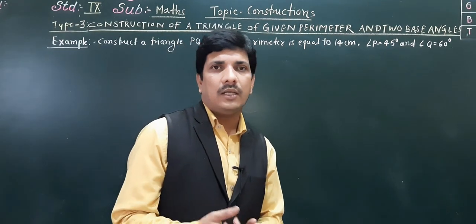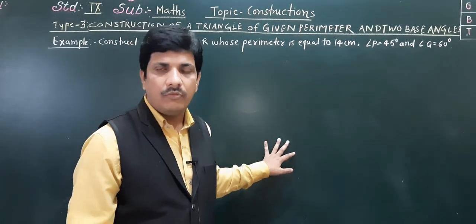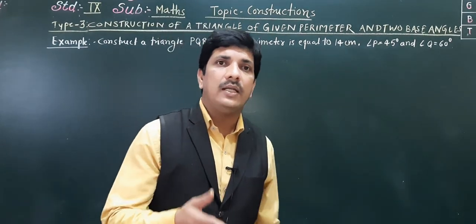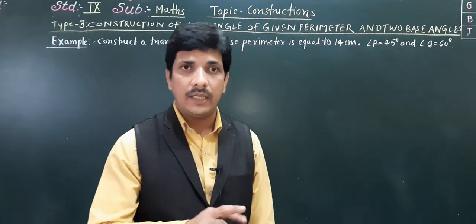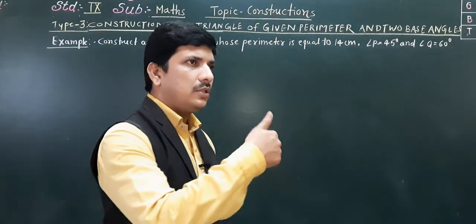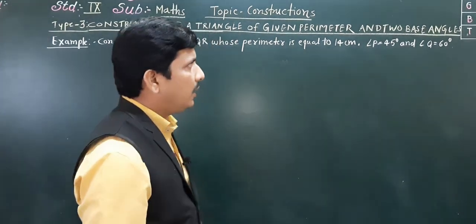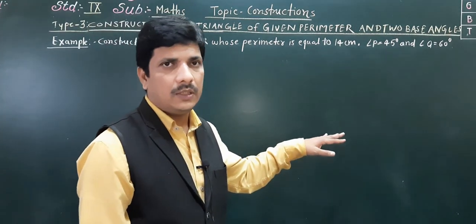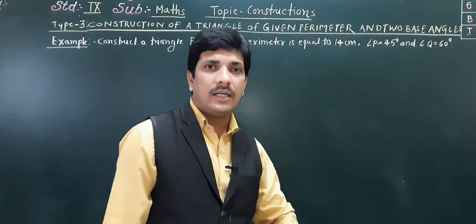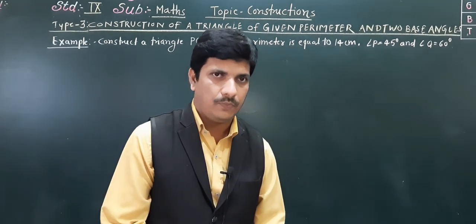The second type we have seen was construction of a triangle when the base is given, a base angle is given, and the difference between two sides is given — and in that we saw two cases. Now this is the third type of construction: when the perimeter is given and two base angles are given, that is what we are going to see today.